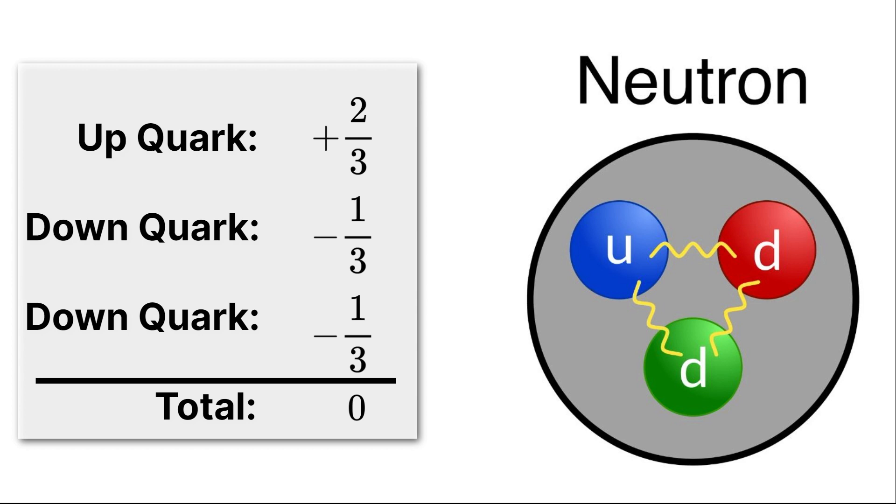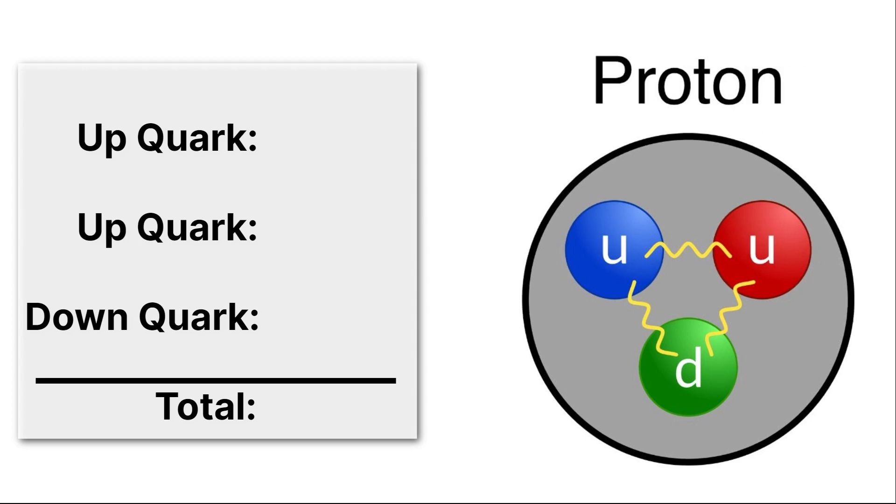Now let's take a look at the proton. It has two up quarks and one down quark. Each up quark is plus two-thirds, and the down quark is minus one-third. So when I add two-thirds to two-thirds, I get four-thirds, and then I take away a third, and I just get regular old plus one, exactly what you expect for a proton.